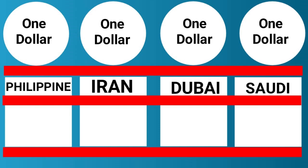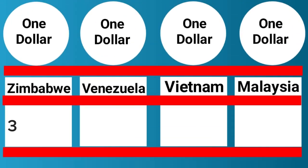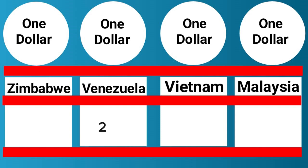1 US Dollar is equal to 3.70 Dubai Dirham. 1 US Dollar is equal to 3.75 Saudi Arabia Riyal. 1 US Dollar is equal to 361.90 Zimbabwe Dollar. 1 US Dollar is equal to 27.10 Venezuela Bolivar.